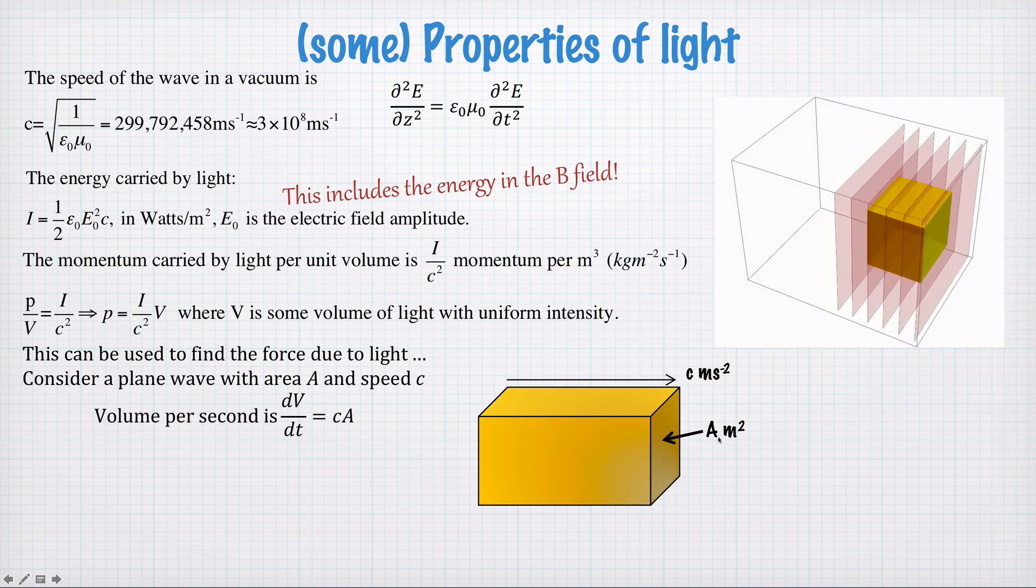So the rate at which a volume passes through this surface here, dV/dt, is c times A. A really simple way to think about this, imagine the length of this box is c. If we see the speed of light, then this entire box will pass this point in one second. So the volume per second is c times A.